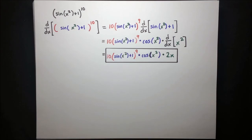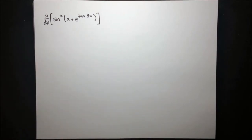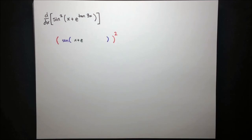Now that we see how peeling the onion works on a three-layer onion, let's try something more complex — that expression from the very beginning of the video with an extraordinarily long derivative. We'll differentiate it by peeling the onion, and it'll really just take a single step. This expression is a little sneaky because sine squared means take the square after taking the sine, so the outermost layer is really the squared. After that is the sine, then x plus e to some power, then the tangent in the power of e, and finally the innermost layer is 3x inside the tangent.